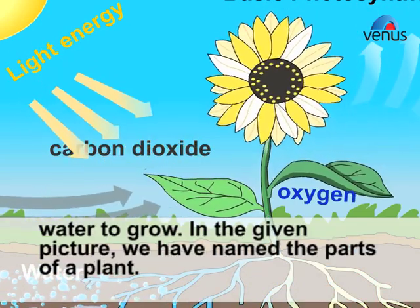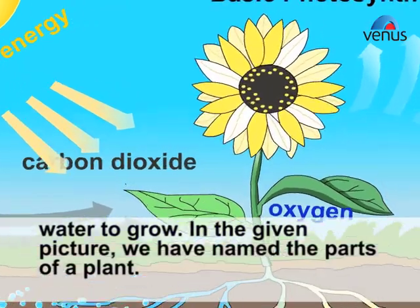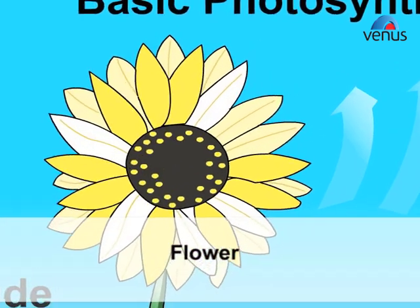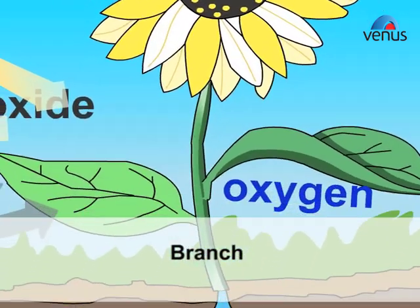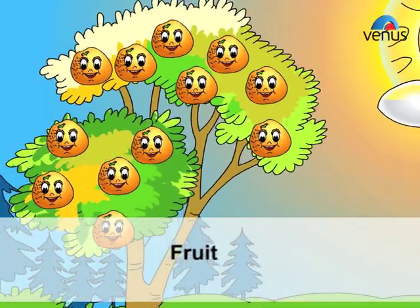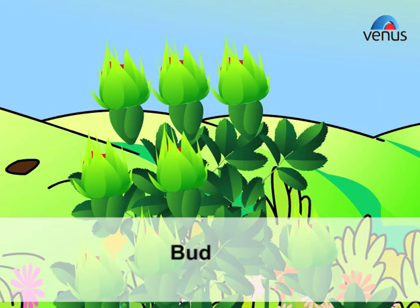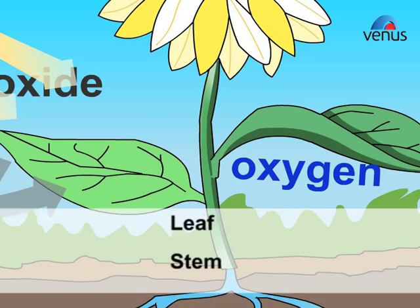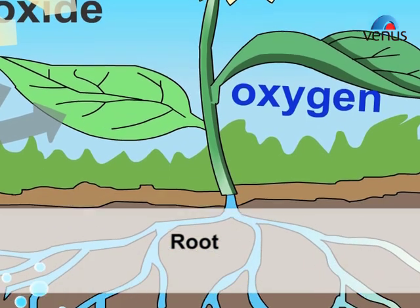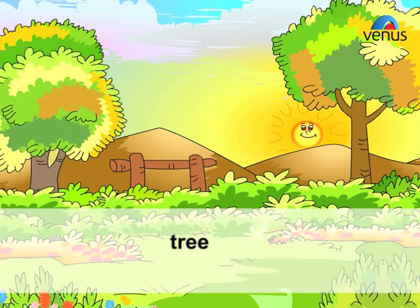In the given picture, we have named the parts of a plant: flower, branch, root, bud, leaf, stem, root, and tree.